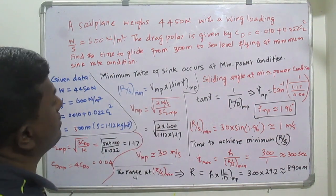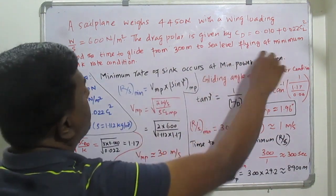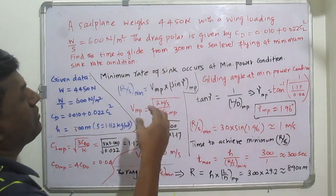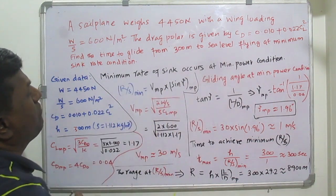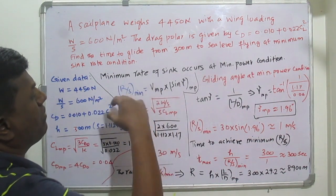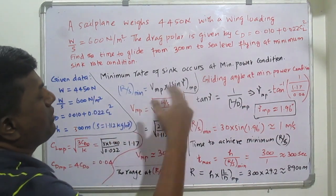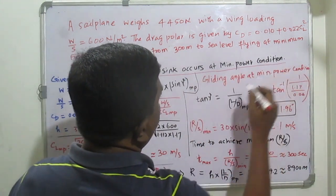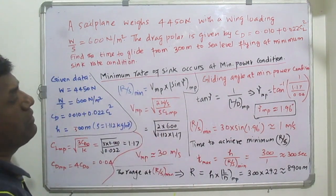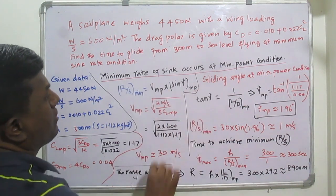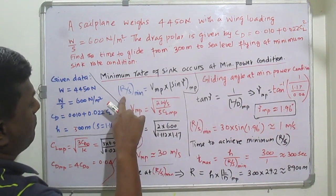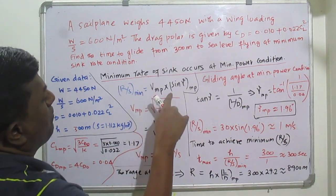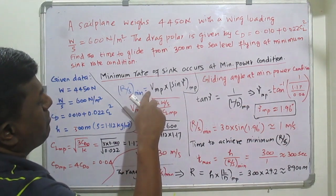Moving towards the solution: since the problem asks for minimum rate of sink, we first need to find the minimum rate of sink itself. Minimum rate of sink generally occurs at minimum power conditions, as we have seen in our previous lectures. The minimum rate of sink equals velocity at minimum power multiplied by sine of the gliding angle at minimum power.